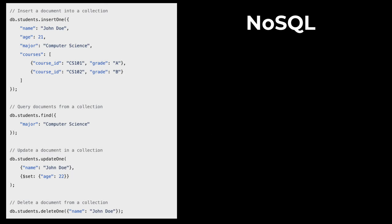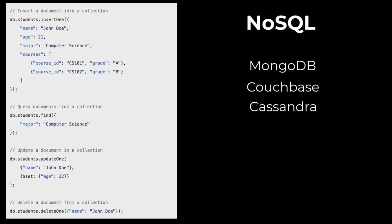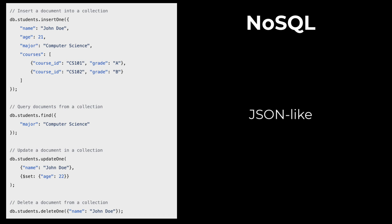NoSQL injection attacks are a type of security threat that occurs when an attacker can manipulate queries to a NoSQL database by injecting malicious input. NoSQL databases such as MongoDB, Couchbase, and Cassandra are often targeted due to their flexible query languages and lack of strict schema enforcement. Unlike traditional SQL databases, NoSQL databases often use JSON-like query languages, which can be more susceptible to injection attacks if input validation and sanitization are not correctly implemented.